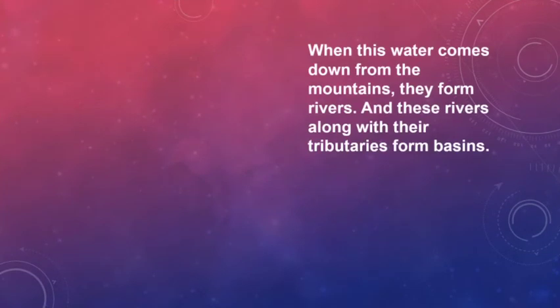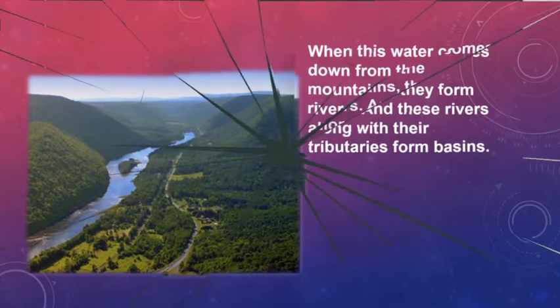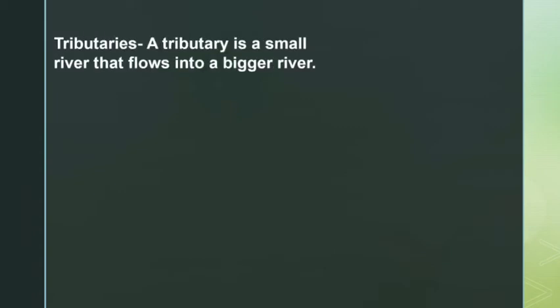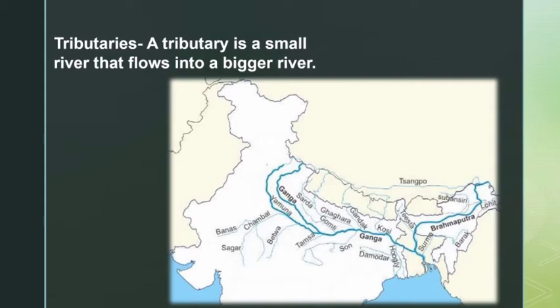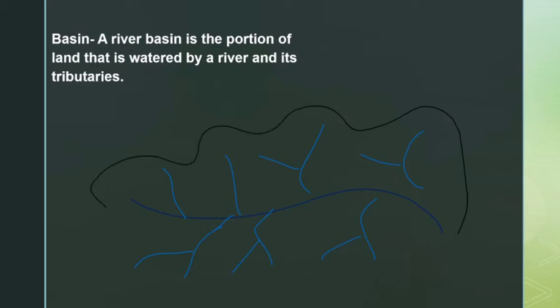When water comes down from the mountain, it forms rivers, and these rivers along with their tributaries form basins. A tributary is a small river that flows into a big river. A basin is the portion of land that is watered by a river and its tributaries. For example, the main river and its tributaries water a certain area, and that area is known as a basin.